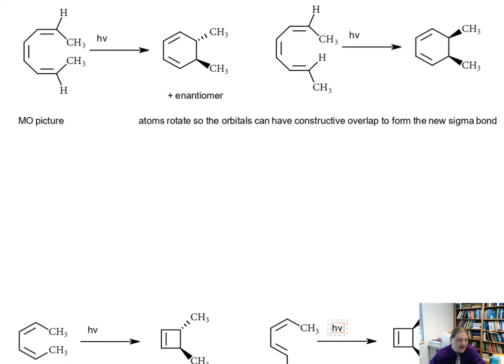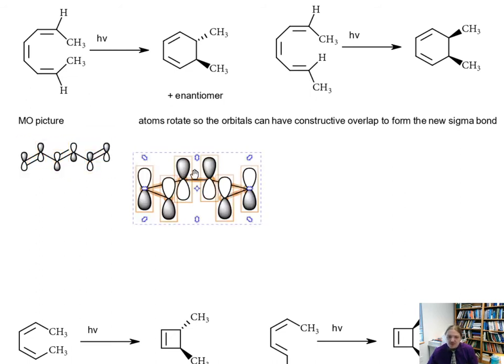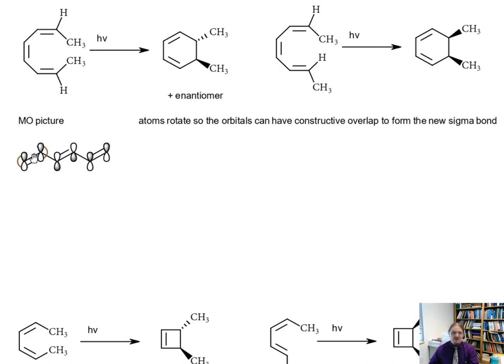The first thing we need to look at or remember is that using a molecular orbital picture, the atoms rotate so that the orbitals can have constructive overlap. When we were looking at the thermal version, we were looking at an orbital picture that looked like this, using the HOMO of 1,3,5-hexatriene. But once you irradiate 1,3,5-hexatriene with UV light in the appropriate wavelength, this is no longer the HOMO.